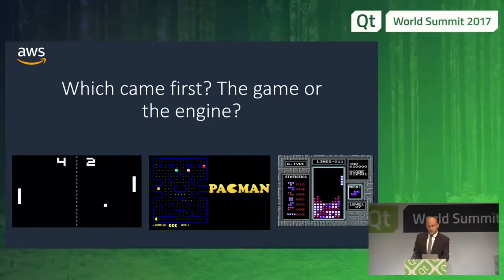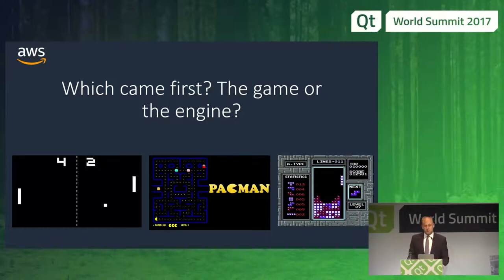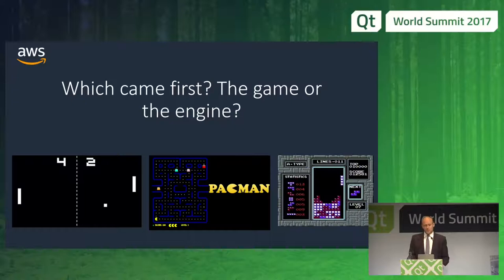Nowadays we tend to think that developing a game starts with a game engine, but video games existed long before engines. Early games were simple and specific because they had to be programmed for relatively slow machines and fit in tiny chunks of memory. These were the old classics — Pong, Pac-Man, even later titles like Tetris. Each game was its own, programmed from scratch, with short efficient code designed to bring that one game idea into reality.